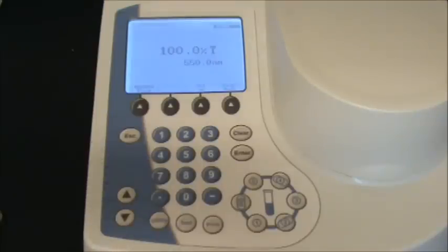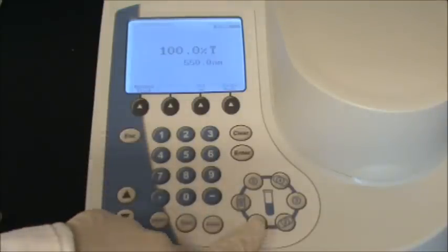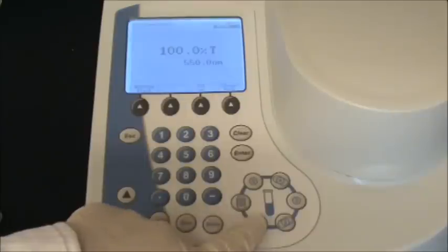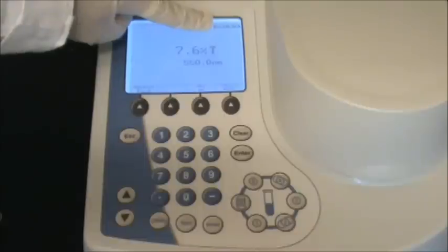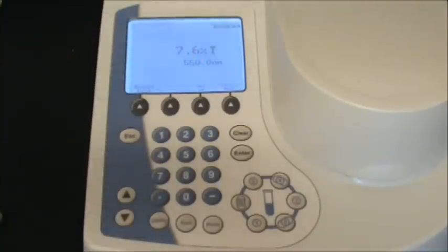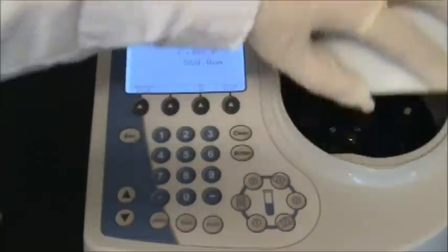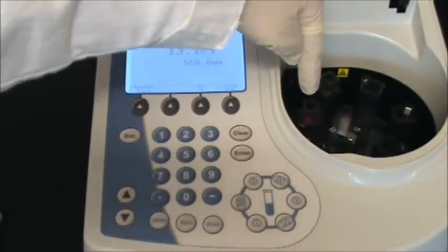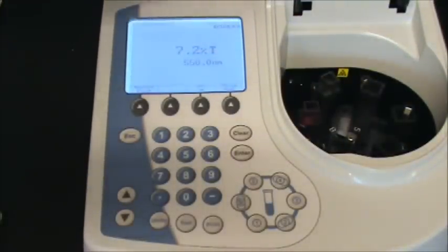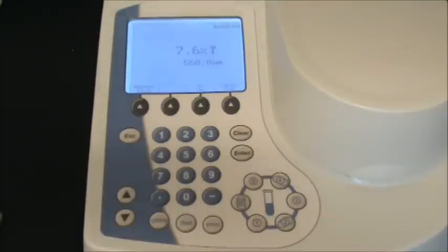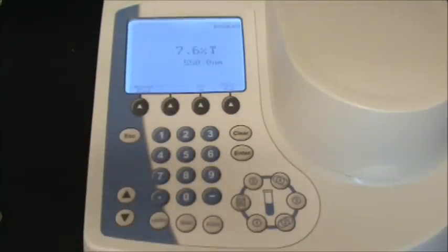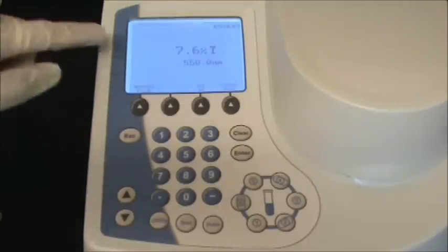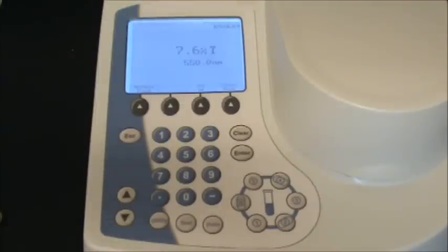Now you want to change over to the tube you want to read. Click on number one. You'll see the carousel switches from blank to cell number one, which tells you the sample tube is now in place for reading in the path of the light. After you've measured your blank and rotated your sample into position, it's currently reading 7.6% transmittance.